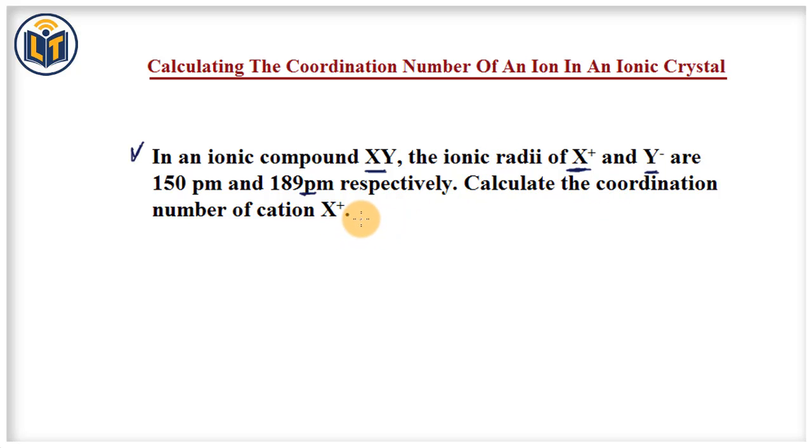We can apply the formula of radius ratio. Here we have radius ratio that is cation radius divided by anion radius. Radius ratio is equal to cation value 150 pm divided by anion value 189 pm.